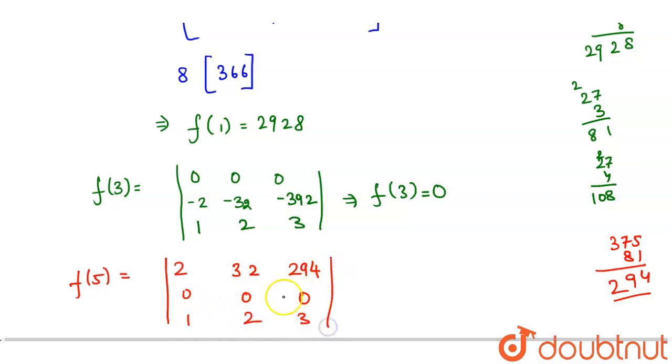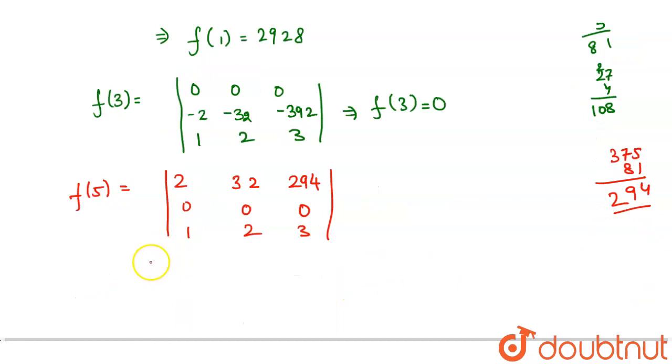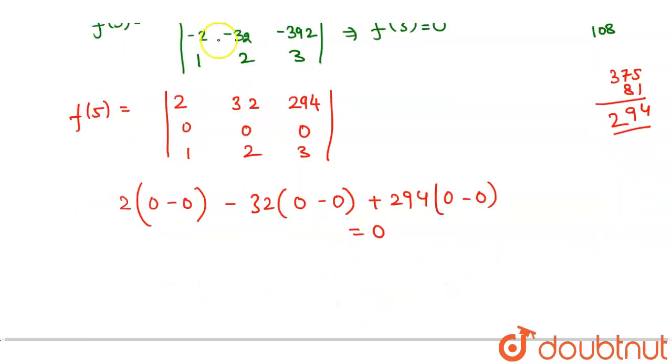So as you can see, I have one complete row as 0. So this is going to be 0. I'll show you the expansion along the row, then you'll be satisfied. So 2 into 0 minus 32 into 0 plus 294 into 0, this becomes whole 0.